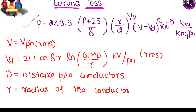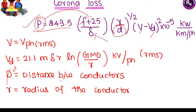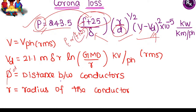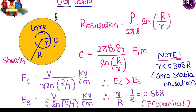Corona discharge — the important Peek's formula is given with all parameters: f is frequency, P is corona loss, δ is air density factor, r is conductor radius, d is distance between conductors, V is supply voltage, and Vd is disruptive critical voltage. Key relation: corona loss P is directly proportional to (f + 25), directly proportional to √(r/d), and directly proportional to (V − Vd)². Corona loss is directly proportional to (f + 25) — this is a very important relation frequently asked in examinations.